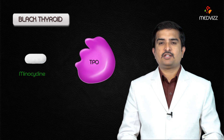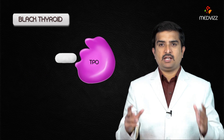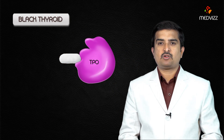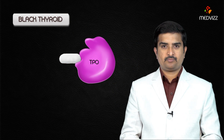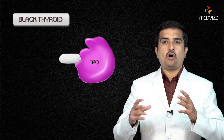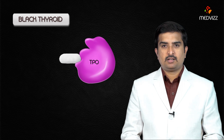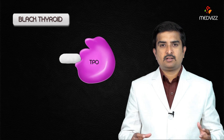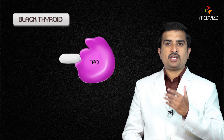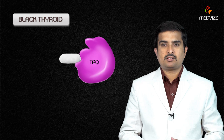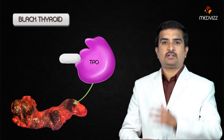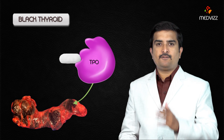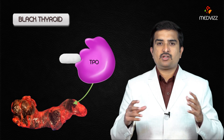Minocycline is a competitive inhibitor of the enzyme thyroperoxidase, and the deposition of pigment mainly results from an oxidation interaction between the drug and thyroid peroxidase, causing discoloration of the gland.